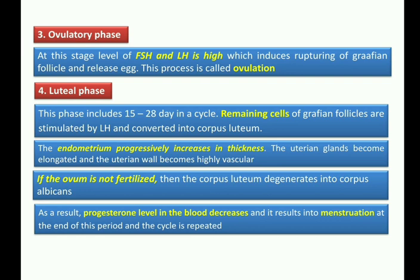When FSH and LH levels peak, the Graafian follicle ruptures and degenerates. The secondary oocyte that developed inside the Graafian follicle is released — this process is known as ovulation. The ovulatory phase generally occurs at the mid-point of the menstruation cycle, around days 14 to 15.